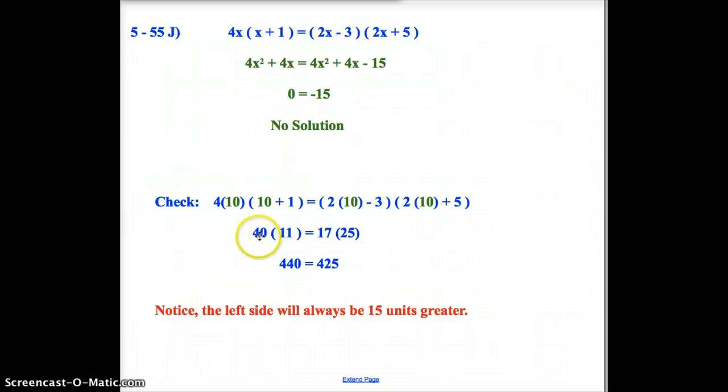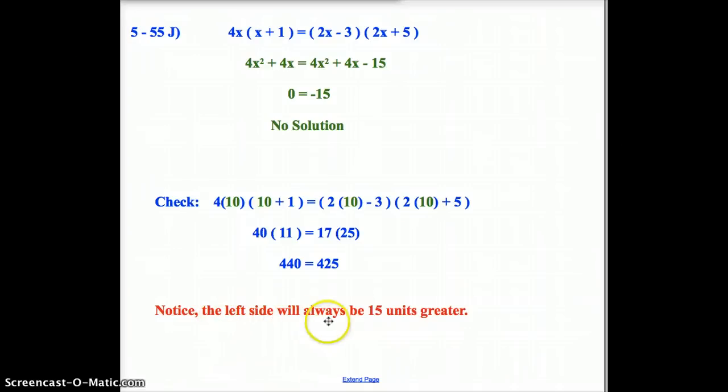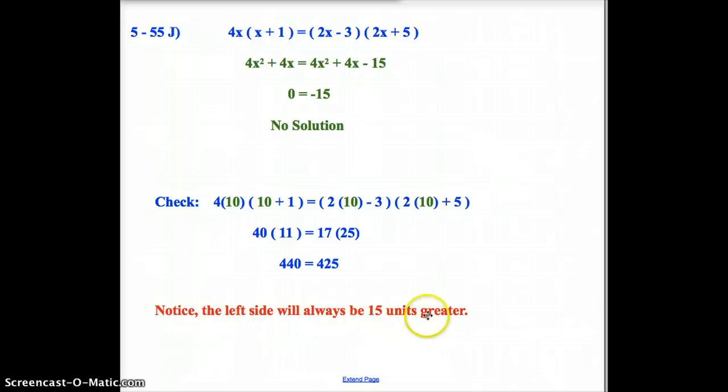What you will notice, and here's how you know the check came out correctly on this one, is notice that the left side will always be 15 units greater, just like it was up here when 0 is greater than negative 15 by 15 units. Your answer here of 440 is 15 units greater than 425. That way you know that the left side is always going to be greater, and there will be no solutions.